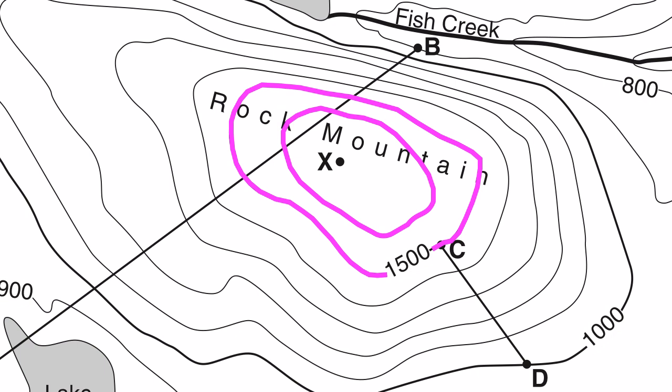Now, I can conclude that point X, because it's inside the 1600 line, has to be higher than 1600. But notice there's no 1700 line.